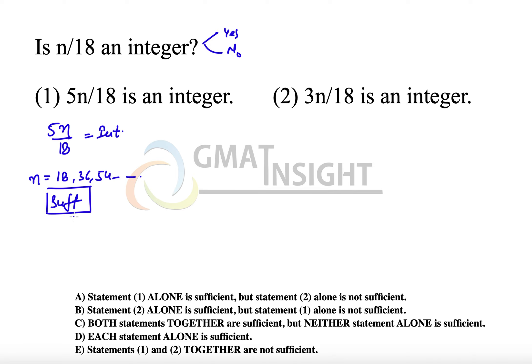The assumption taken was that 5n is divisible by 18, whereas that's not necessary. So go to Rule 4: always dig out what the question has not mentioned. What is the question silent about? You realize the question does not mention any property about n. Since the question is silent about n, n can be positive or negative, and n can be an integer or a fraction.